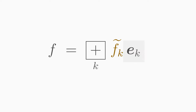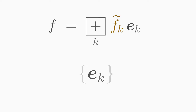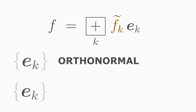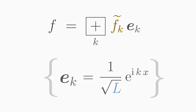Which basis functions can be used for the Fourier series? All those that satisfy the properties of a basis. To call a set of functions a basis, they must satisfy two conditions. First, the basis functions must be orthonormal — that is, orthogonal to each other and normalized. Second, the set of basis functions must be complete; in other words, they must span the space in which the functions f live.